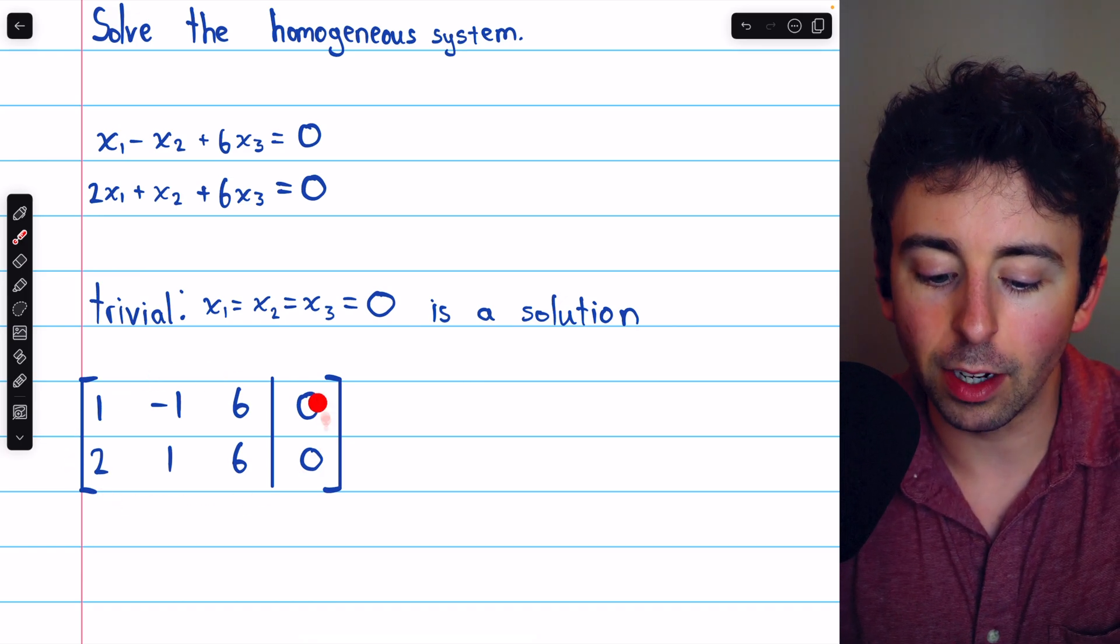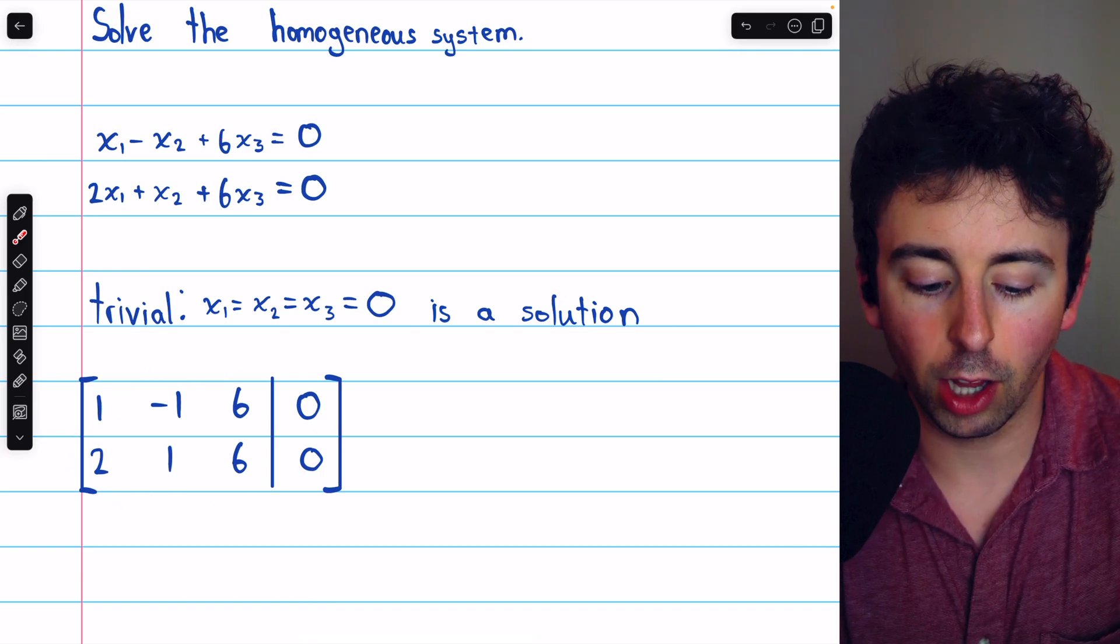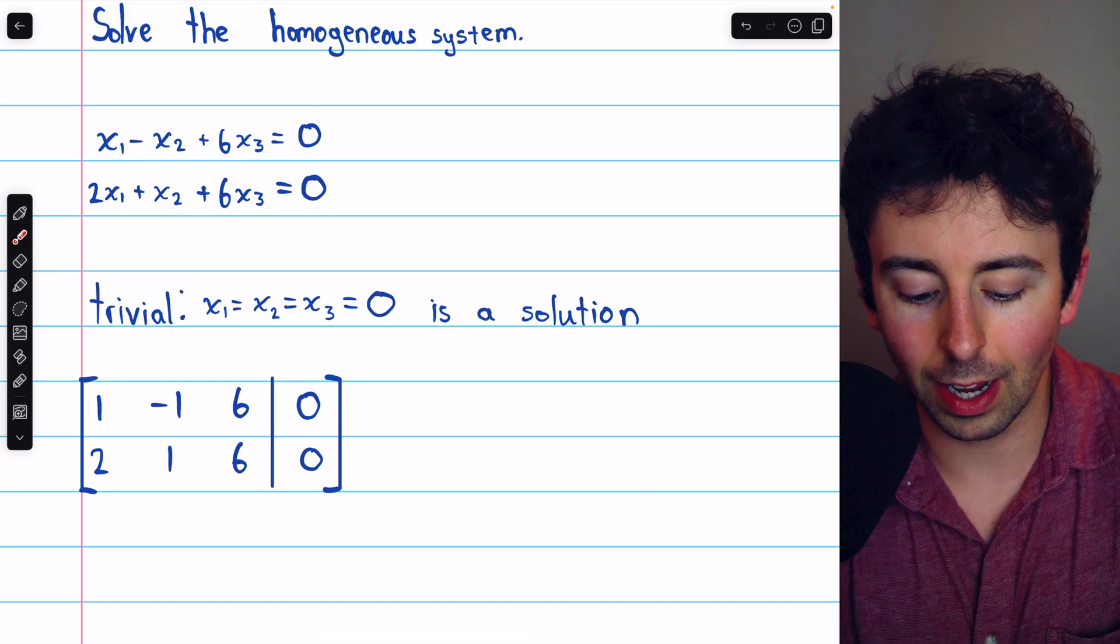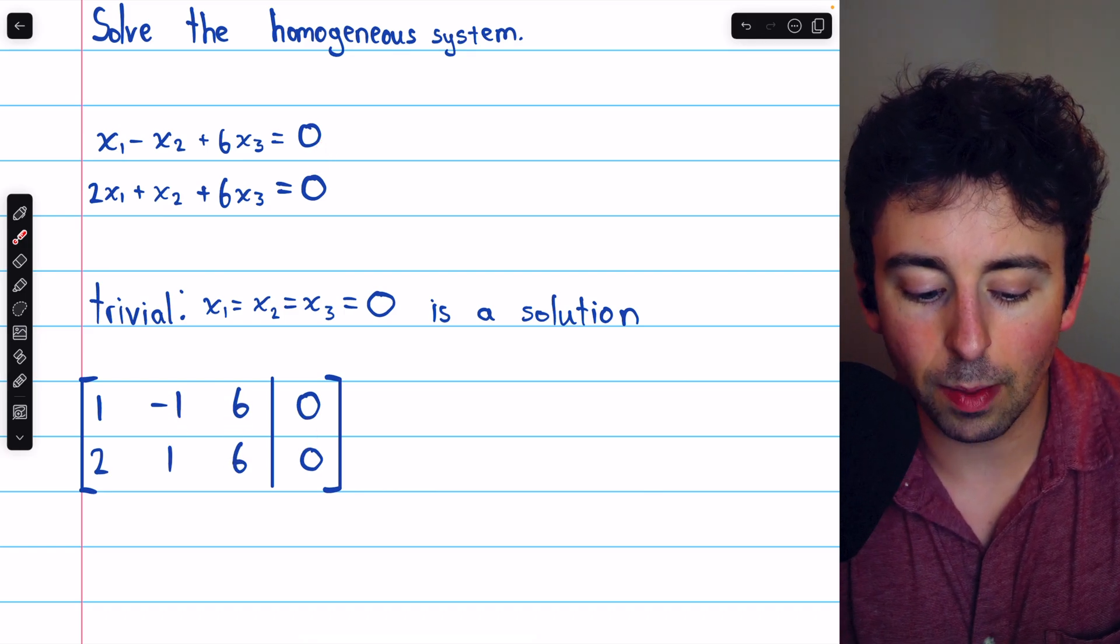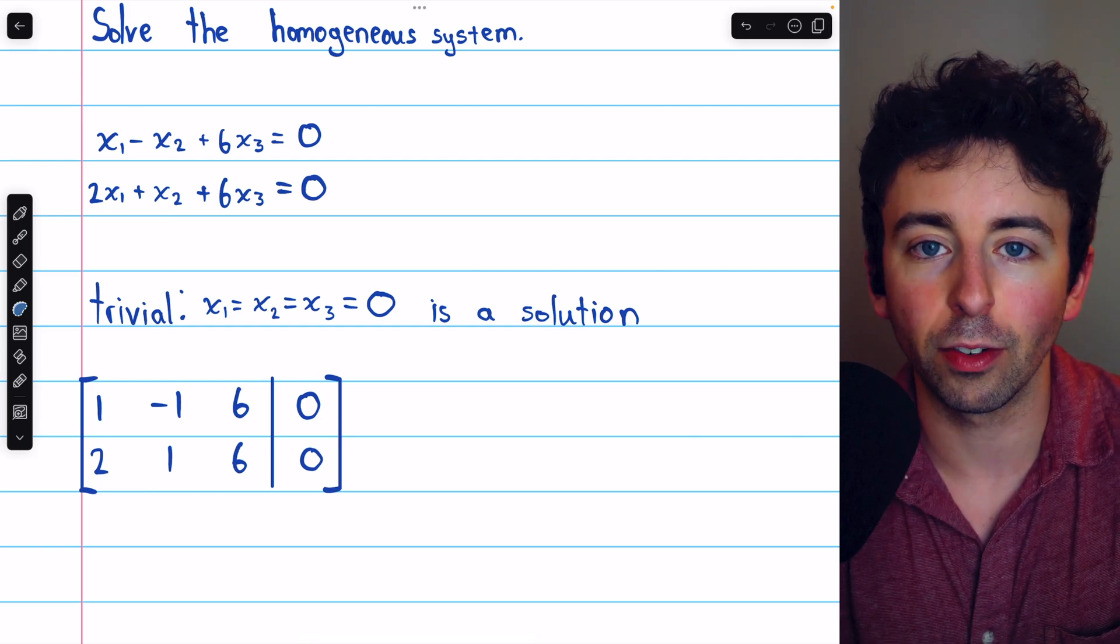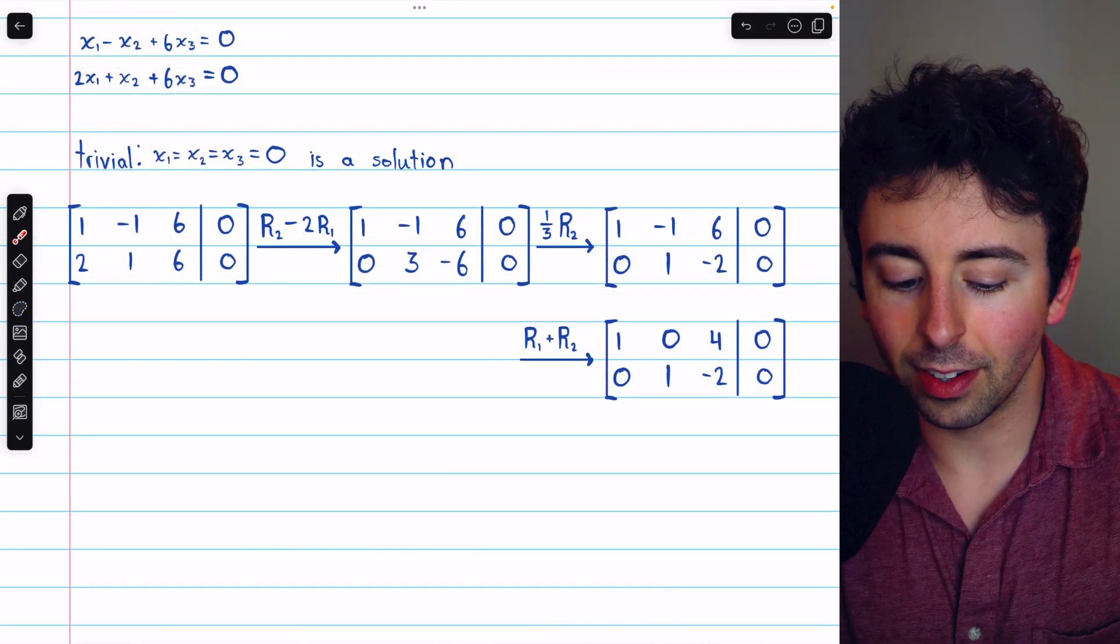We begin by writing the augmented matrix for the system. This column has the coefficients of x1 and so on. We've got the constants on the right. Then, we can perform Gauss-Jordan elimination and get this into reduced row echelon form.